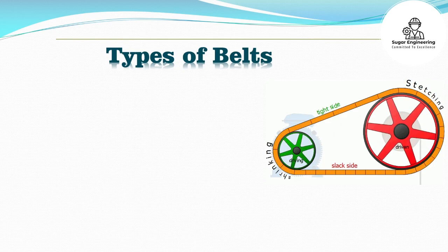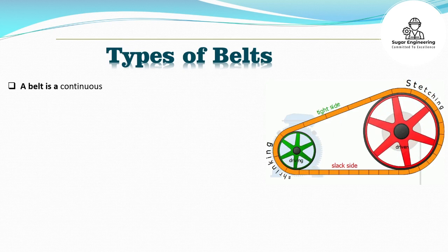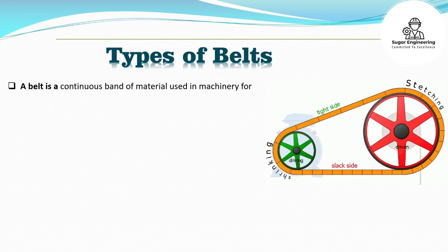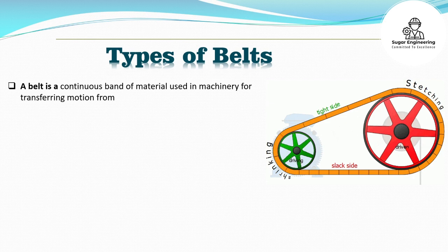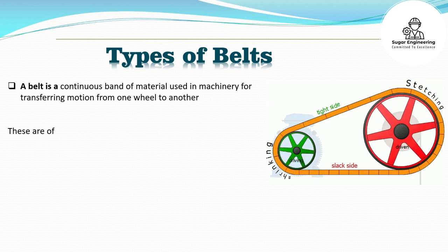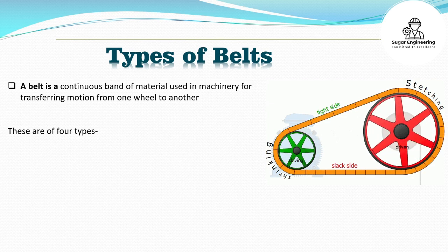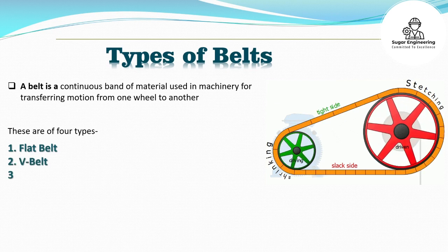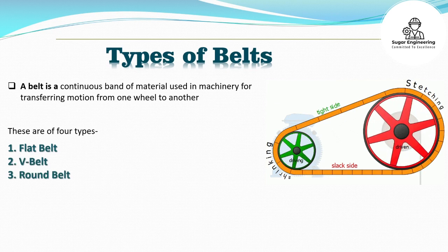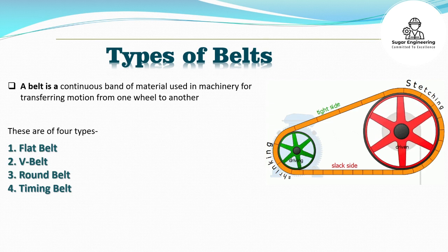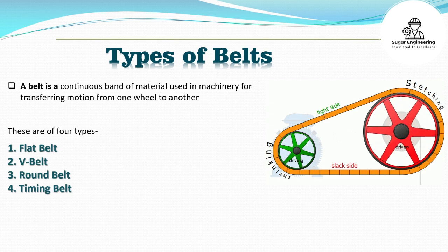A belt is a continuous band of material used in machinery for transferring motion from one wheel to another. These are of four types: 1. Flat belt. 2. V-belt. 3. Round belt. 4. Timing belt.